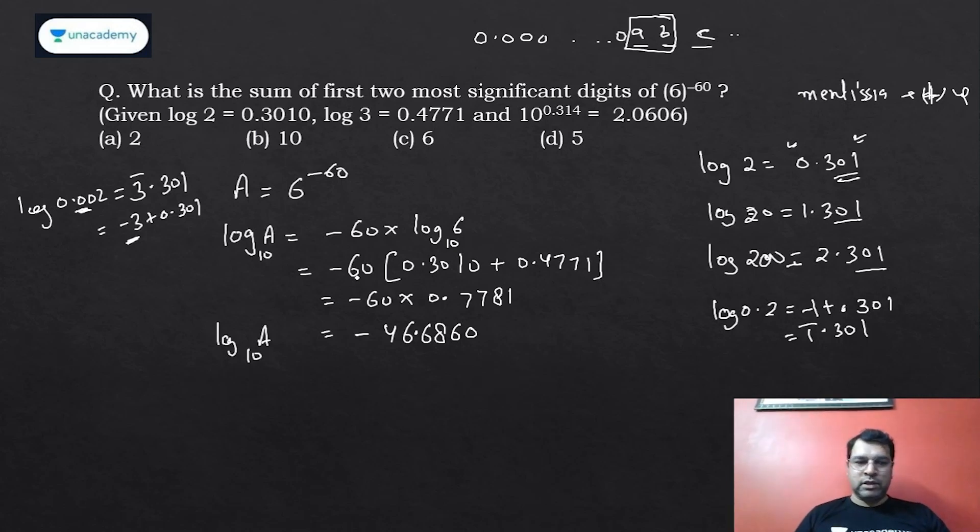Now if you see this, the mantissa is not positive—it's negative. It is actually -46.686. I need to make the mantissa positive. For that, I subtract one and add one, so it becomes -47 + 0.314.